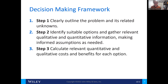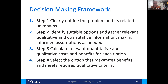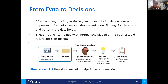The third step is to calculate the relevant information and costs and benefits for each option. The fourth step is to select the option that maximizes the benefits and meets the requirements for qualitative criteria. The fifth step is to execute on your decision.